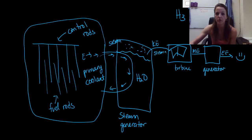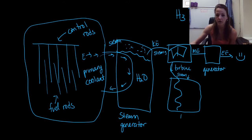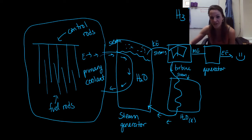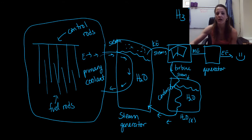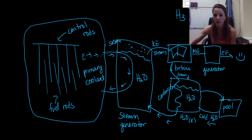The cycle doesn't end there. Steam that moved through the turbine comes out and goes to a condenser. As steam goes in, liquid water comes out of the condenser and goes back into the steam generator. There's also a separate pool cycle — we pump cold water into the condenser to cool the steam, and warm water is pumped back out to the pool. This is how we manage the three different cycles.